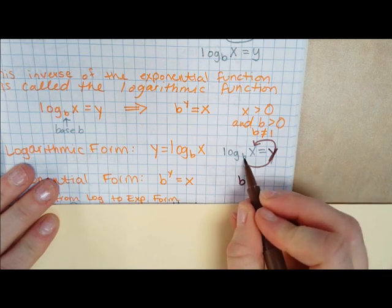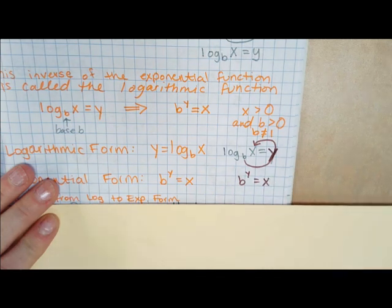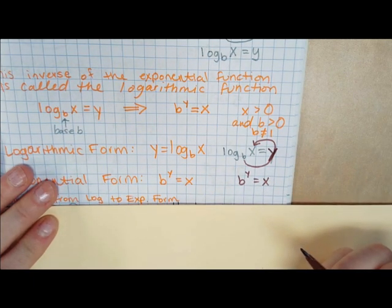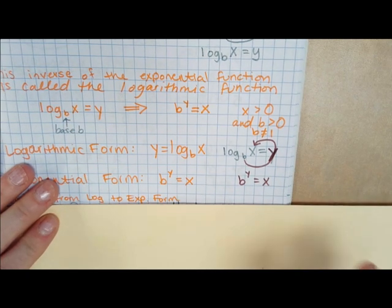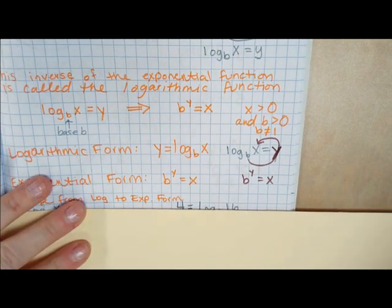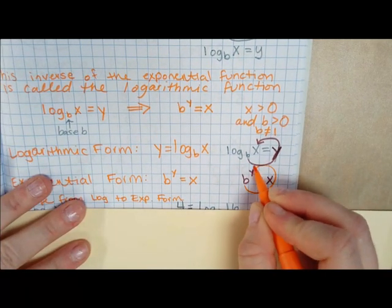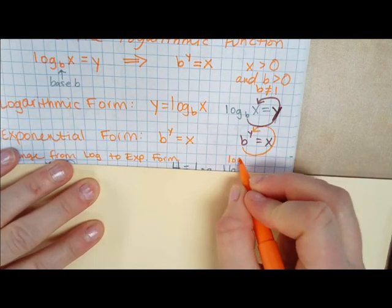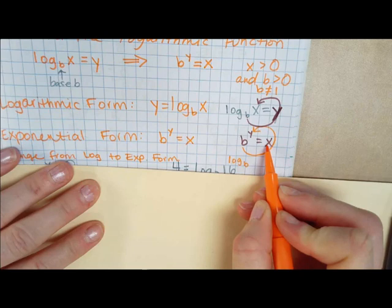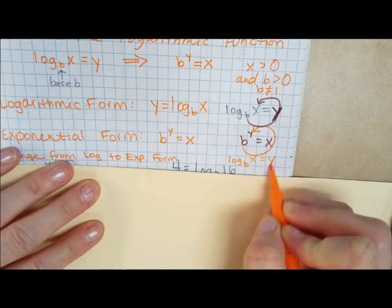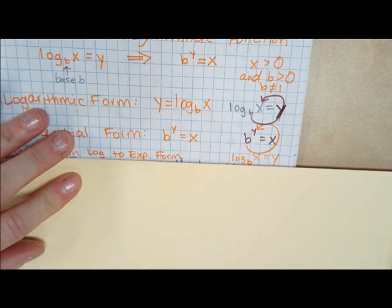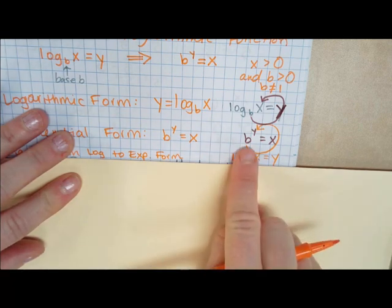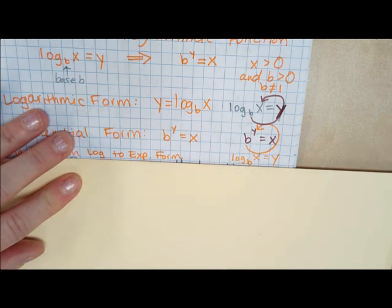Whenever you have it in log form, put log base B of X equals Y first. The way you convert it is you start at the base, then curve around. The easiest way to remember is: B to the Y equals X — base, exponent Y, equals X. You can convert back doing the same thing: start in exponential form, take the curve around, and get log base B of X equals Y. More practice will make this make sense.